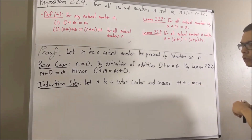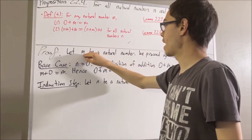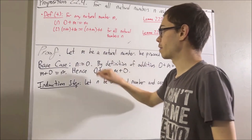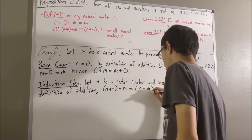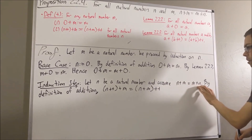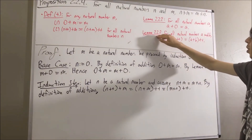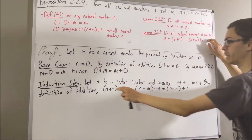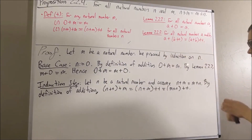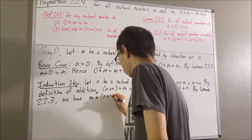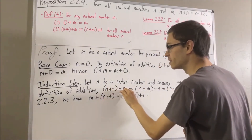To see how that comes together, let's first note that by definition of addition, if we take m and n as in our proof, then we have that the successor of n plus m equals the successor of n plus m. Since n plus m is equal to m plus n by our induction hypothesis, we can replace n plus m with m plus n. Then, applying lemma 2.2.3, taking a to be m and b to be n, we get that m plus the successor of n equals the successor of m plus n. So this is equal to this, which is equal to this, meaning the successor of n plus m equals m plus the successor of n.